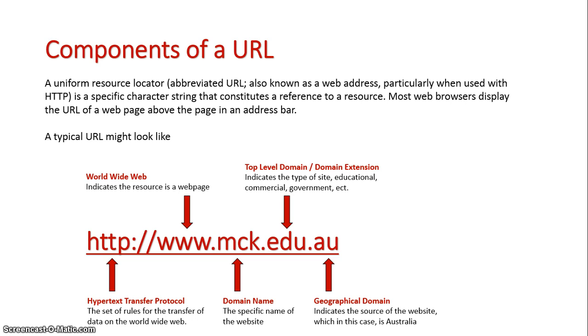A geographical domain shows where the site is from, so .au shows it's an Australian website. There's also .ca for Canada or .gr for Greece, and they outline what country the website originates from.